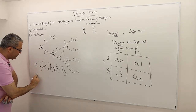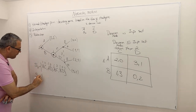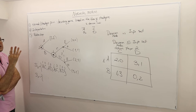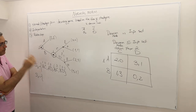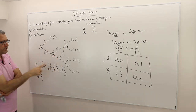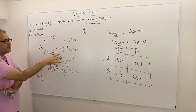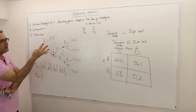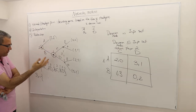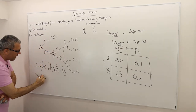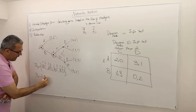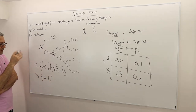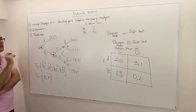What about player two? Player two's life is much simpler because he has just one info set, and in that info set there are two available actions, E and F. So she has only two strategies: E and F.